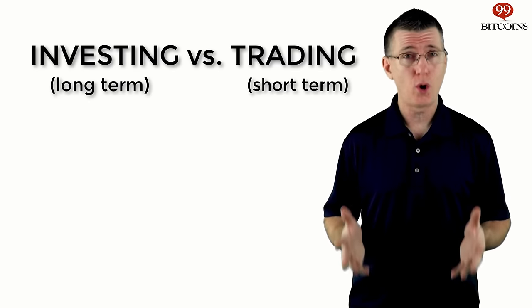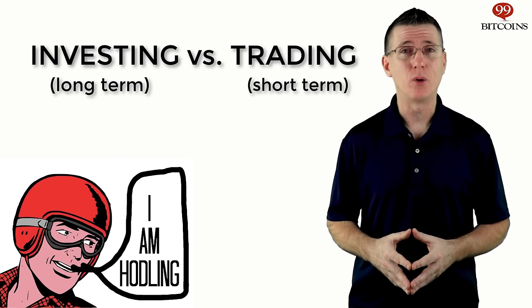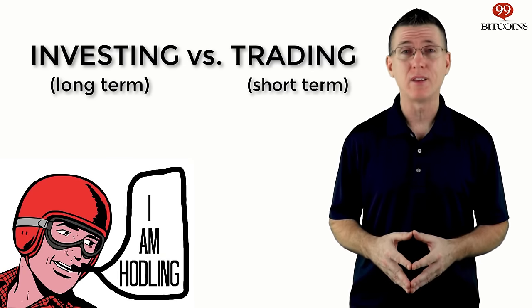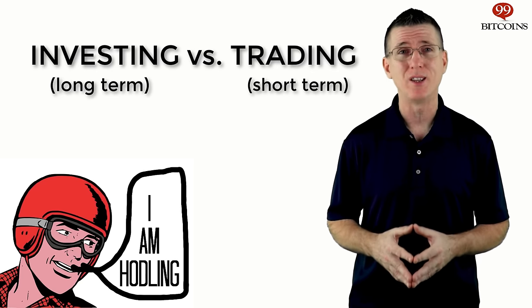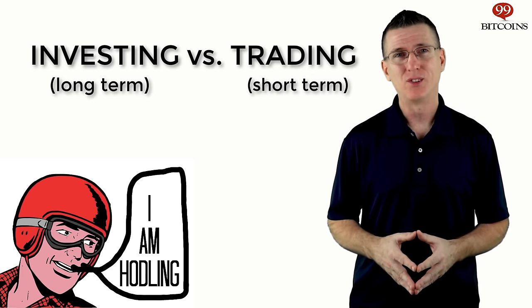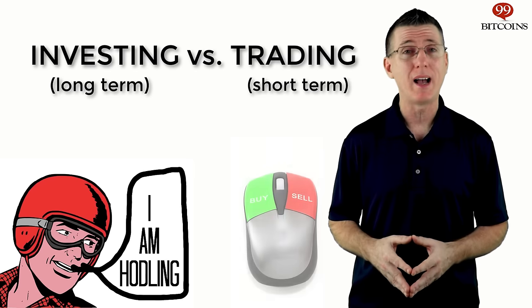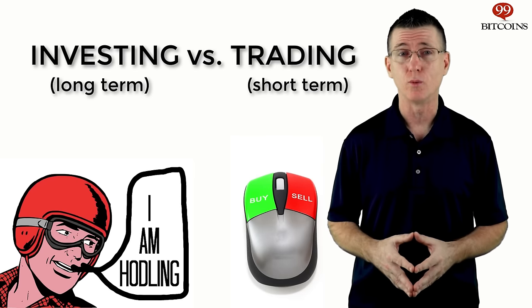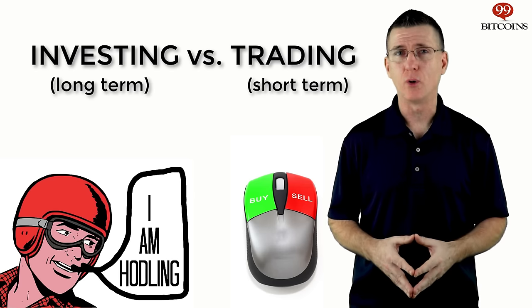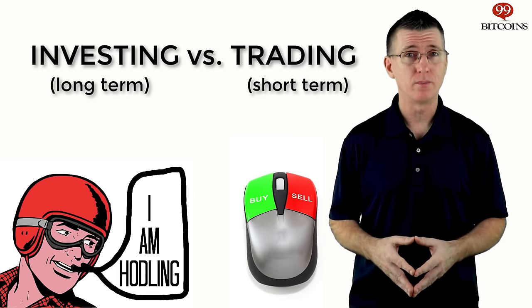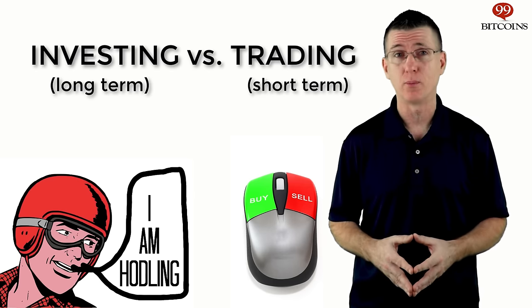Bitcoin investors tend to hodl the currency long term. Hodl is a popular term in the Bitcoin community that was actually born out of a typo of the word 'hold' in an old 2013 post in the Bitcoin talk forum. So while Bitcoin investors buy and hodl for the long term, Bitcoin traders buy and sell Bitcoin in the short term whenever they think a profit can be made. Traders view Bitcoin as an instrument for making profits — sometimes they don't really care about the technology or ideology behind the product they're trading.